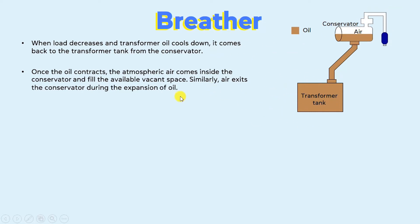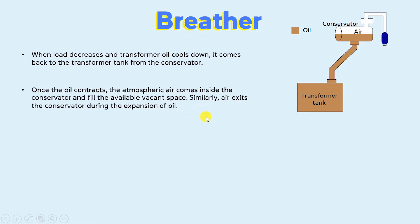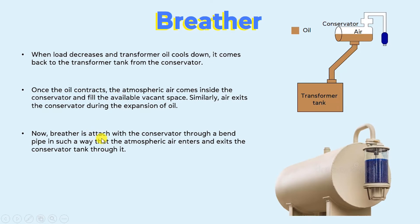This is how this phenomenon works. Coming back to the breather — the breather is attached with the conservator through a bent pipe in such a way that the atmospheric air enters and exits the conservator tank through it. As you can see in the diagram, the cylindrical container is the breather, which is attached with the conservator through a bent pipe.